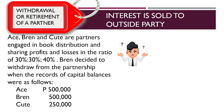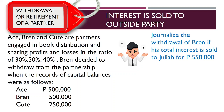They share profits and losses in the ratio of 30%, 30%, and 40% respectively. Brand decided to withdraw from the partnership when the capital balances were: Ace — $500,000; Brand — $500,000; and Qt — $250,000. The requirement is to journalize the withdrawal of Brand if his total interest is sold to Julia for $550,000.